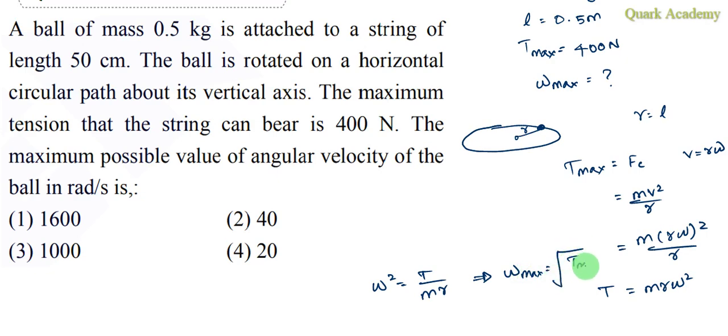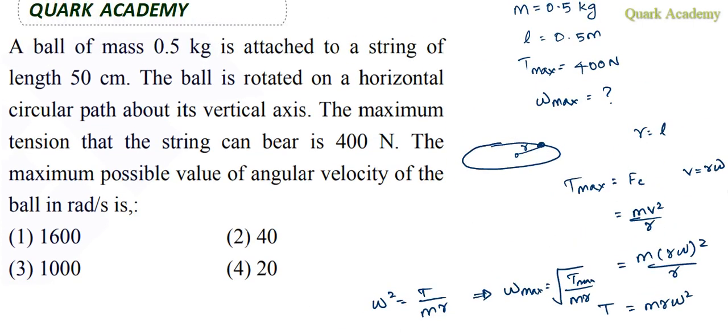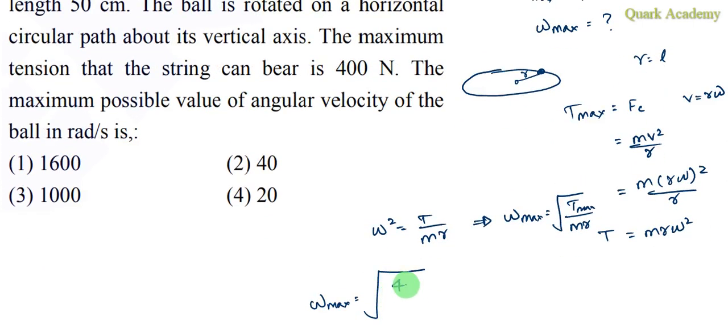Omega max equals the square root of T_max by mr. So omega max equals the square root of T_max by r. T_max is 400 newtons, m is 0.5 kg.